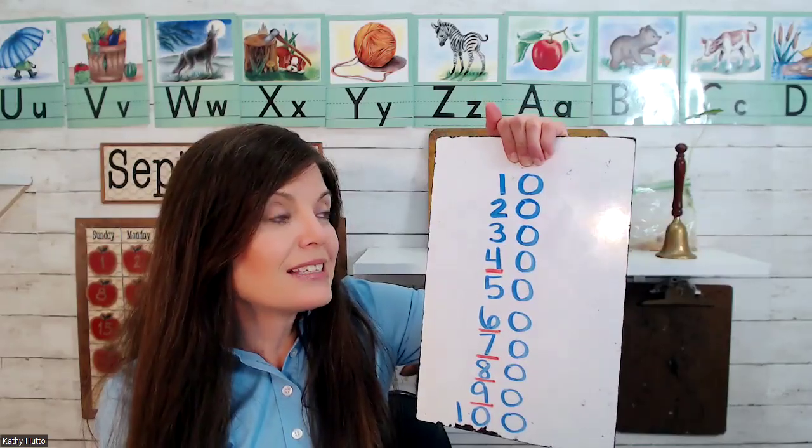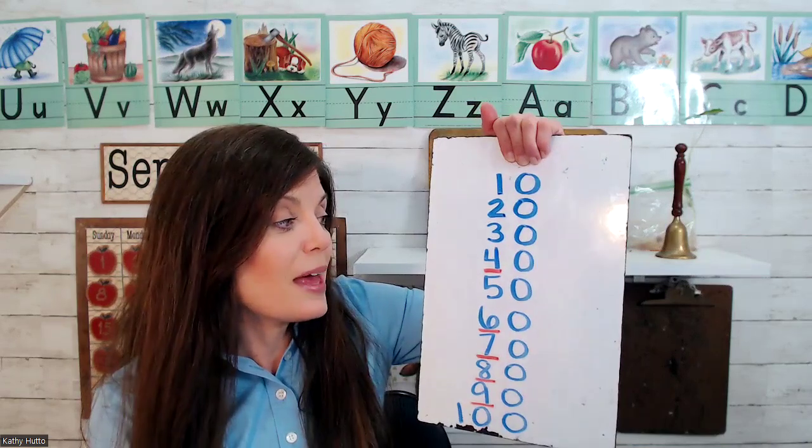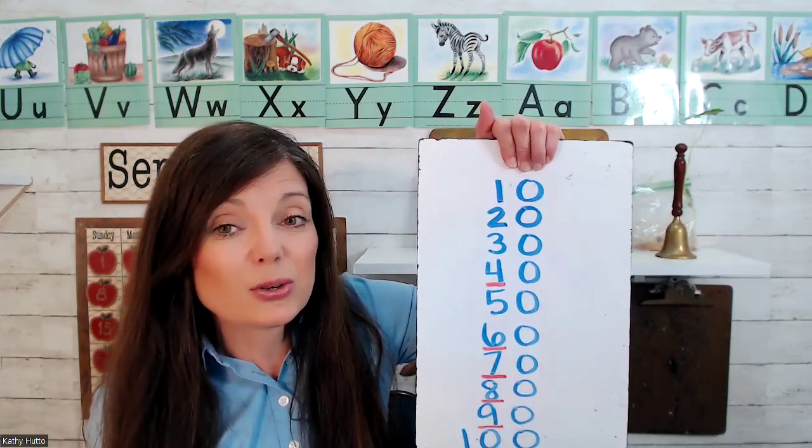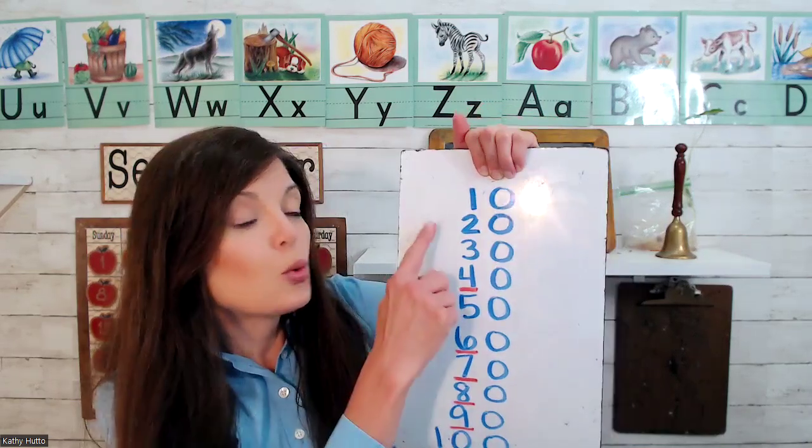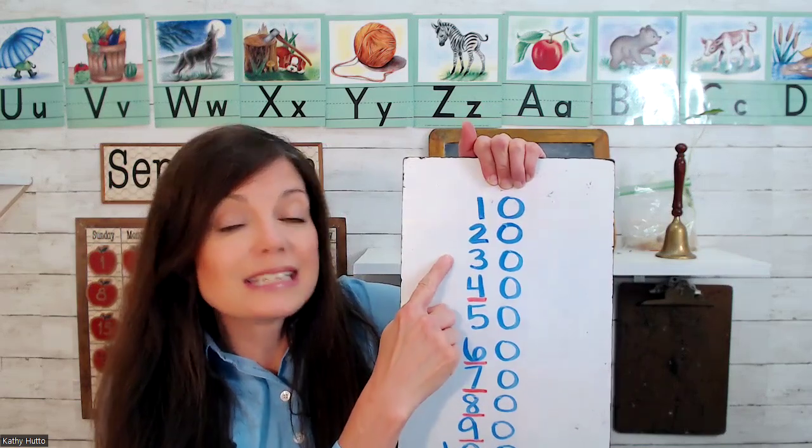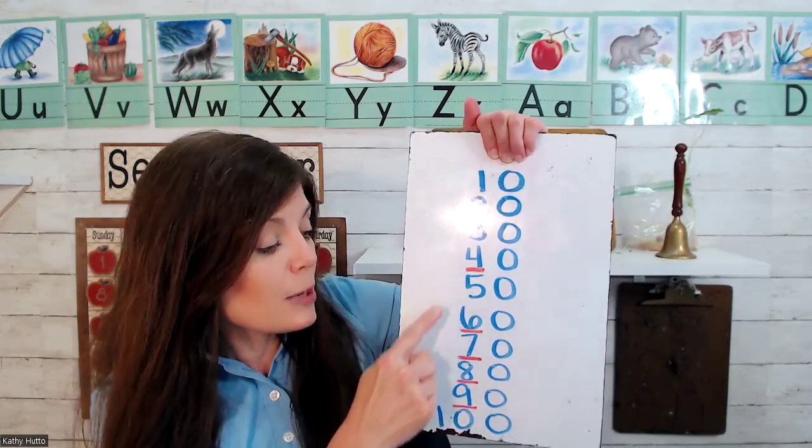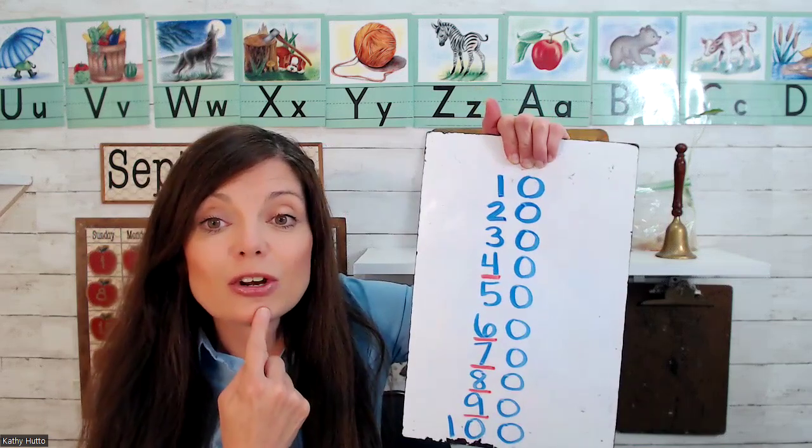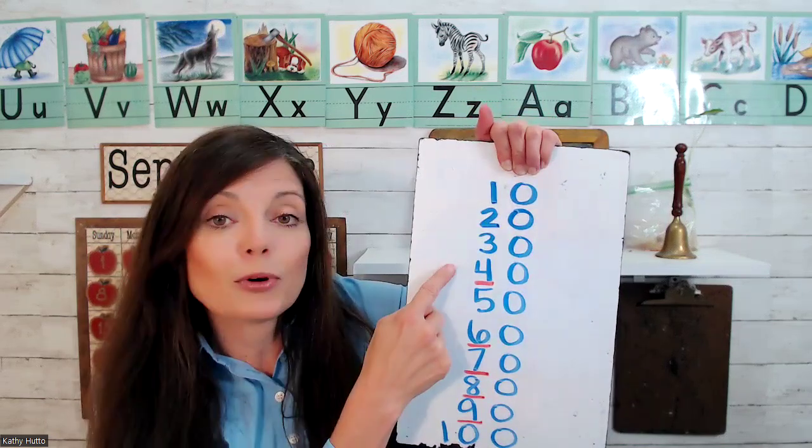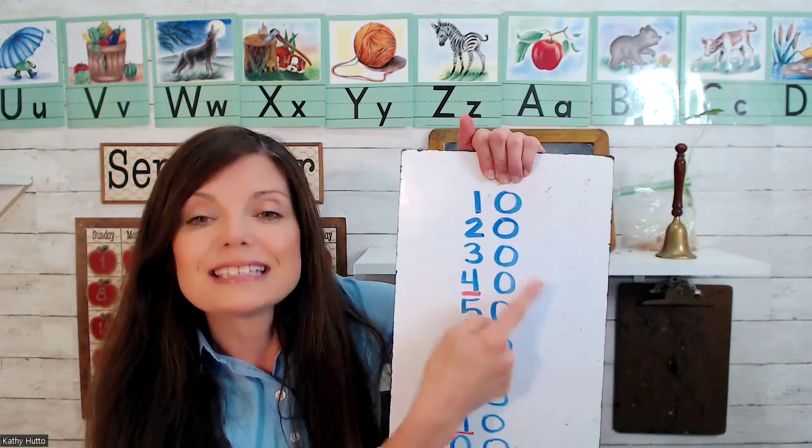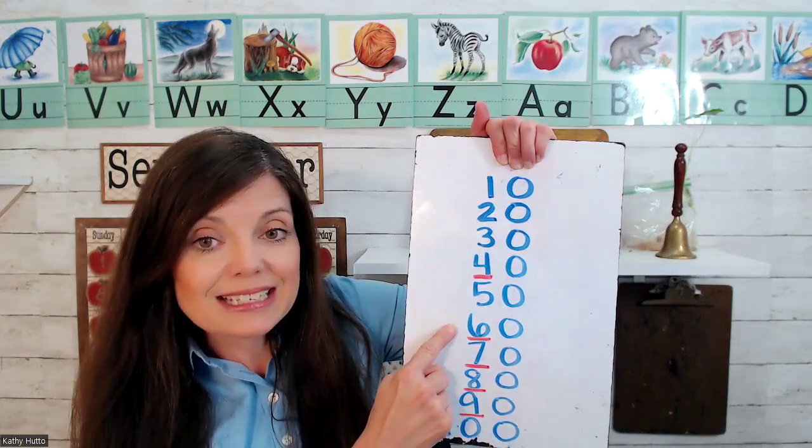Did you notice that after most of them, it sounds like the letter T? 20, 30. And did you notice that some of the numbers, I can hear the number, the name of the number at the beginning like this? 4, T, 6, T, 7, T, 8, T, 9, T.